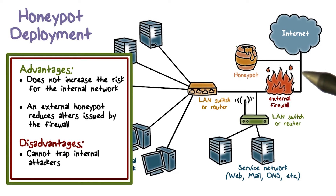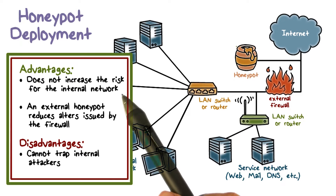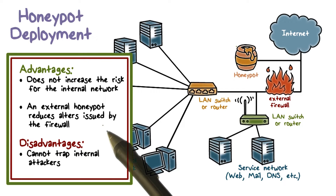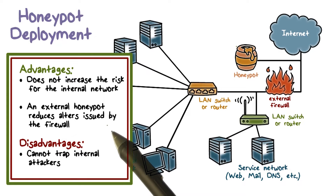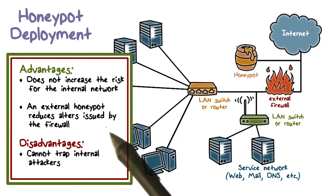The main advantages of placing the honeypot outside the external firewall are: first, it does not have any side effects. Second, since it attracts and traps attacks to the honeypot, it reduces the amount of traffic — in particular the attack traffic to the firewall — and therefore reduces the amount of alerts produced by the external firewall.